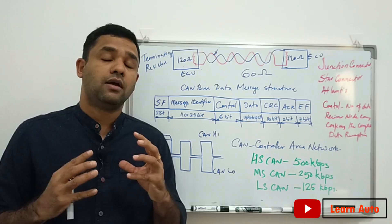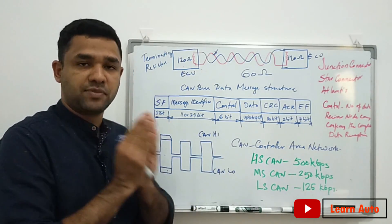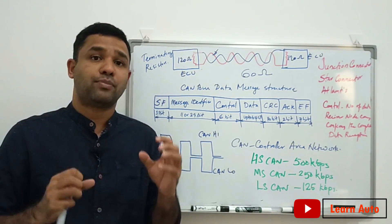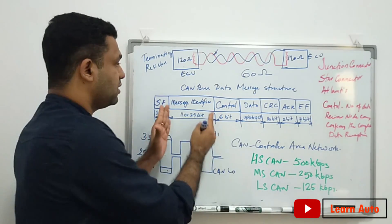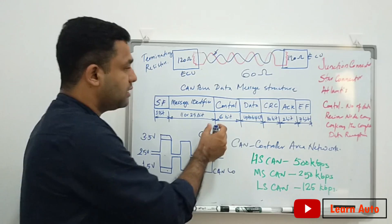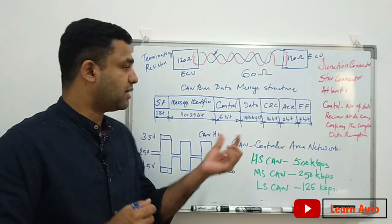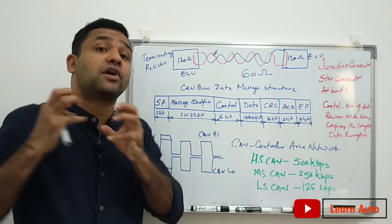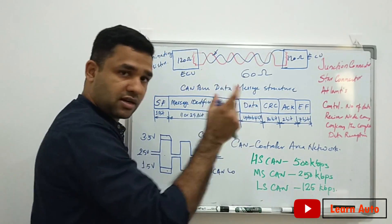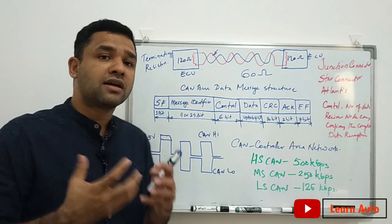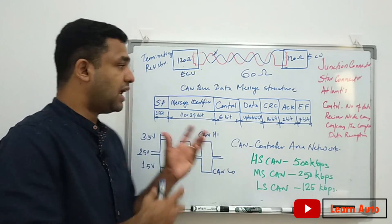In the identifier, one of the messages compared indicates which data is transmitted. This is a report — it identifies data and its priority. Now this is the data field that is being transmitted. The CRC check is where we are checking the data.